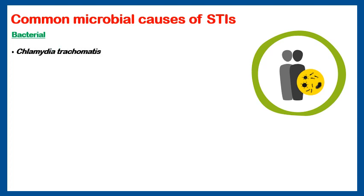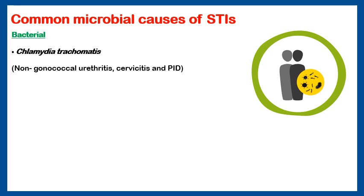Common microbial causes of sexually transmitted infections — bacterial. Chlamydia trachomatis causes non-gonococcal urethritis, meaning inflammation in the male urethra caused by Chlamydia, not by gonococci. We also call it non-gonococcal urethritis. It causes cervicitis — inflammation of the cervix in females — and pelvic inflammatory disease, which is a widespread infection in the pelvis.